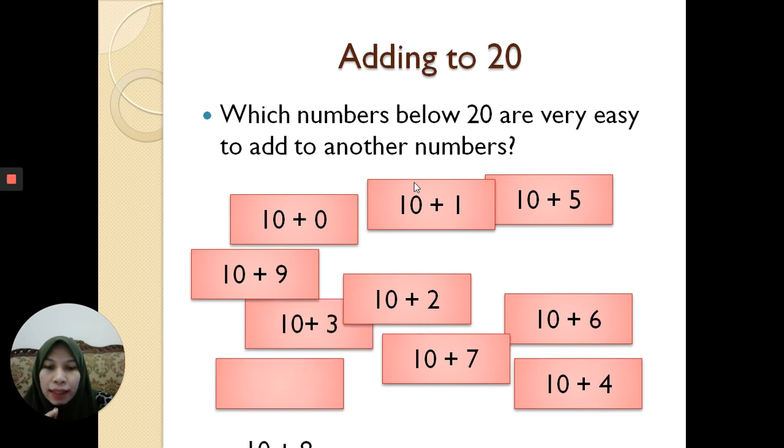So for me, 10 is the number that is really easy to add up with another number since you get the answer straight away, right? 10 plus 0 is 10, 10 plus 1 is 11, 10 plus 6 is 16. So this is one of the easy examples, very easy numbers that you can add up with another number.